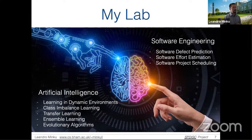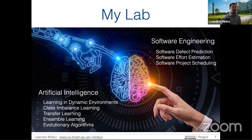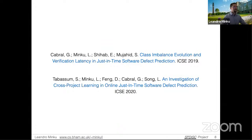My lab works mainly in two areas: artificial intelligence and software engineering. In AI, we work with learning in dynamic environments, class imbalance learning, transfer learning, ensemble learning, and evolutionary algorithms. In software engineering, we work with applications of AI to problems such as software defect prediction, software effort estimation, and software project scheduling. This talk is mainly based on two papers published in 2019 and 2020, though I'll also reference other studies.